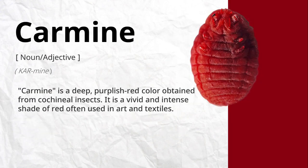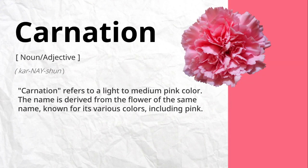Carmine is a deep, purplish-red color obtained from cochineal insects. It is a vivid and intense shade of red, often used in art and textiles. Carnation refers to a light-to-medium pink color. The name is derived from the flower of the same name, known for its various colors, including pink.